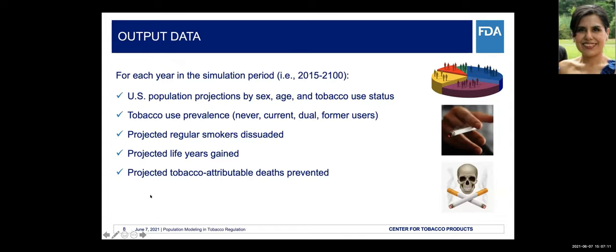For each year of the simulation period — for example 2015 to 2100 — the model can produce US population projections by sex, age, and tobacco use status; tobacco use prevalence for never, current, dual, and former users; projected regular smokers dissuaded; projected life years gained; projected tobacco-attributable deaths prevented; and other population projections important for morbidity and mortality decision-making.